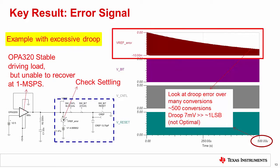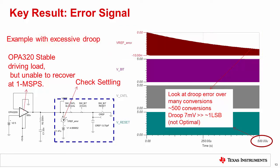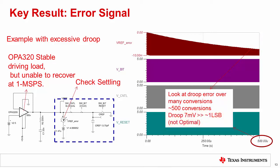This slide shows an example of a SAR reference driver circuit that is unable to recover after every conversion, where the reference input voltage droops. The OPA320 is stable driving the 22 microfarad bypass capacitor and is able to drive the reference input at lower sampling rates. However, the amplifier is unable to recover at the fast throughput rate of one mega sample per second. A transient simulation over many conversions — in this case 500 conversions — is performed to look at the droop of the reference. After 500 conversions, VREF error shows a large voltage droop at the reference input exceeding 7 millivolts. This circuit is not optimal for a one mega sample per second throughput rate, but could work for slower data rates.